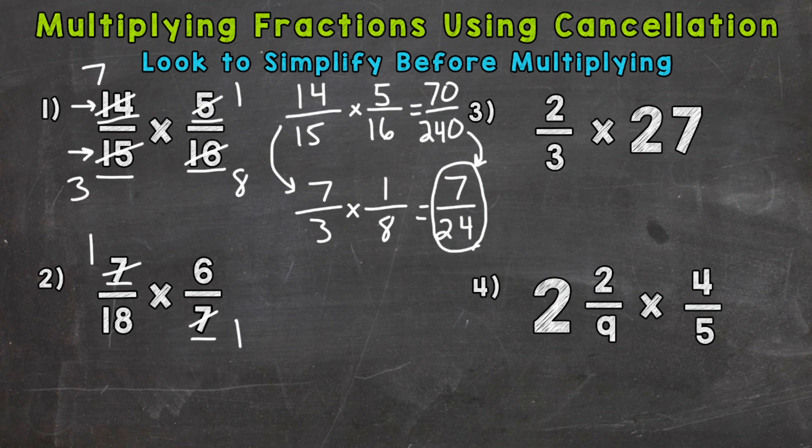Alright, let's take a look at 18 and 6 here. So do we have any common factors? Yes, 2, 3, and 6. Let's use the greatest common factor of 6.